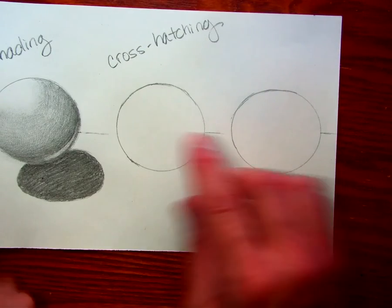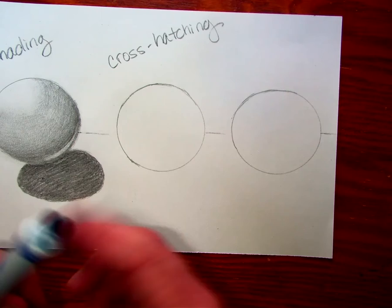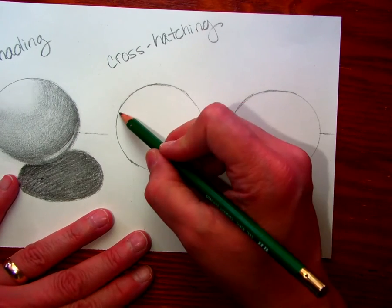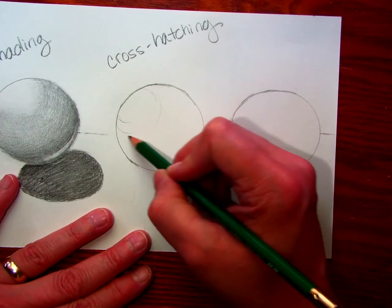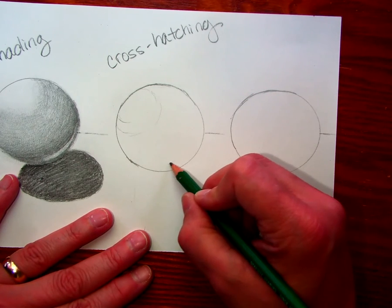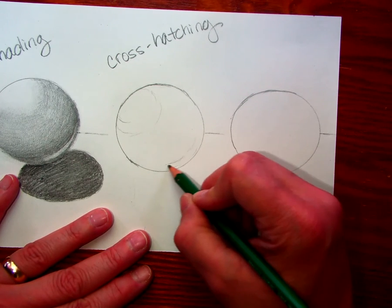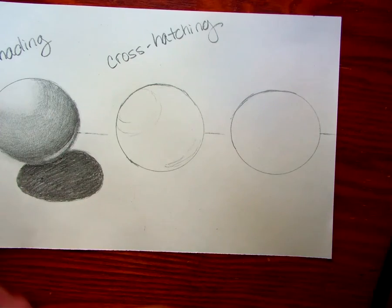So we're going to do the same thing with this, only we're going to use cross-hatching. So I can go ahead and draw where I want that line to be. Kind of pencil that in a little bit, just so I know where I want it to be.